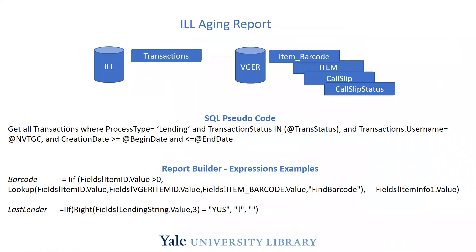For the ILLiad aging report, we're looking at two data sources: the ILLiad transactions table and the Voyager Oracle database. The SQL query in the report builder dataset looks for transactions from the ILLiad database. If it's a loan aging report, we also show the barcode — you can specify which columns display within the report based on parameters. There's a lookup that establishes a relationship between the ILLiad item ID and the Voyager barcode to display that information. This is the expression for the last lender column.